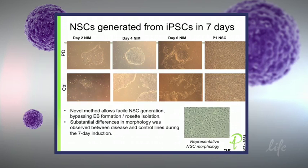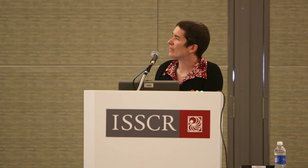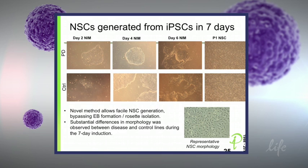This is the workflow. We have a PD line and a control line, all adapted to Essential 8 media, though we've also tested other feeder-free conditions and successfully used these cells with neural induction on mouse feeders. Over the first four days you still see colonies with not much morphological change, but then by day six or seven the colonies are growing these unusual projections. On day seven you use Accutase to dissociate them, replate them on Geltrex, and then you have adherent cultures.